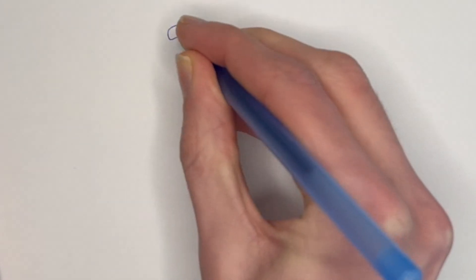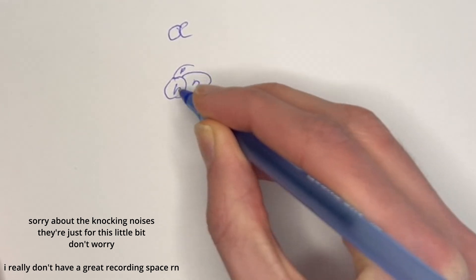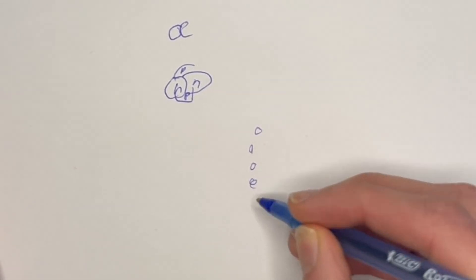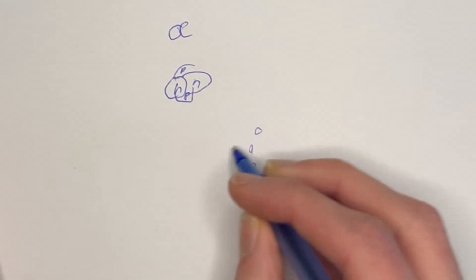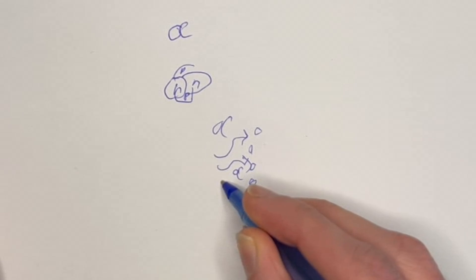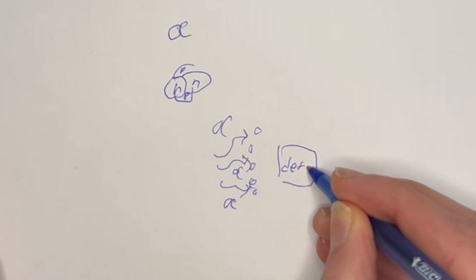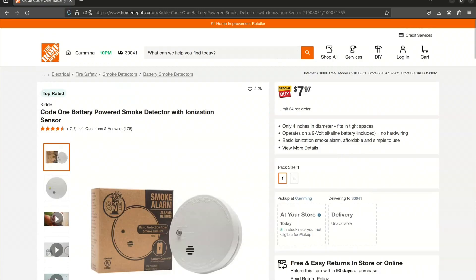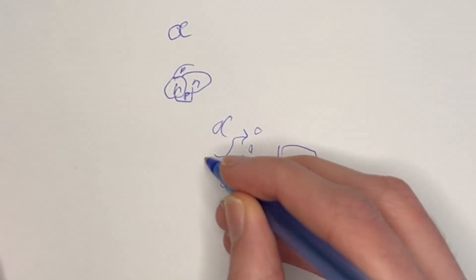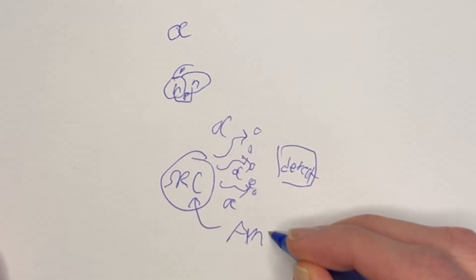Remember alpha radiation which is just two protons and two neutrons and it's pretty easy to stop? It turns out that it's so easy to stop that smoke particles just in the air can stop it too. So if you have a source of alpha particles and a little chamber where smoke could go and then a detector you can actually detect smoke that way and that's how a certain kind of smoke detector called ionization smoke detectors work.